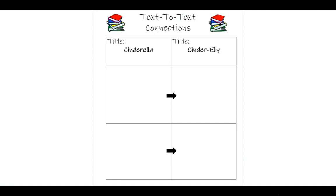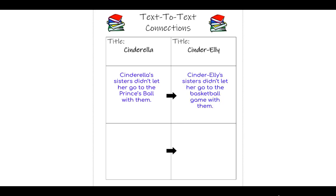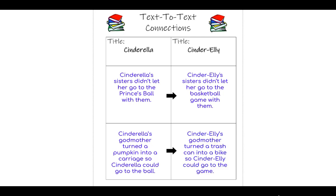Here is an example of the worksheet that's going to be sent to you. In the first column I have Cinderella, and in the second column I have Cinderella. You'll have two different stories, but I'm using this as a model — you are not going to do Cinderella and Cinderella. Under Cinderella I'm typing in my first connection: Cinderella's sisters didn't let her go to the princess ball with them. And the connection I made to Cinderella is that her sisters didn't let her go to the basketball game with them. You're going to type your connections into the boxes. Cinderella's godmother turned a pumpkin into a carriage — the connection to Cinderella is that her godmother turned a trash can into a bike so she could go to the game. So I was able to connect one story to another.